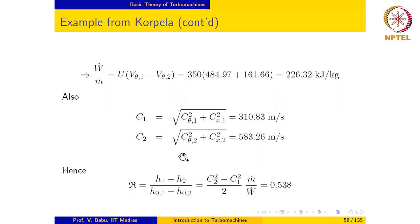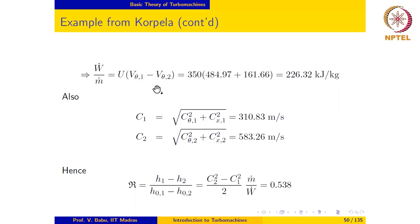I encourage students to go through this example several times and make sure they understand each and every step clearly — particularly the construction of the velocity triangles at the inlet and outlet using the given information, and also paying attention to the sign of v_theta1 and v_theta2 while calculating the specific power output.